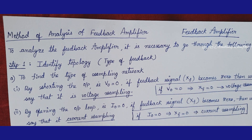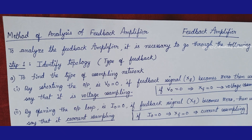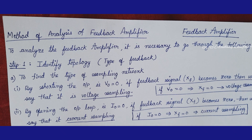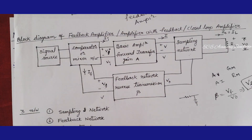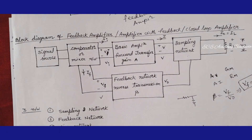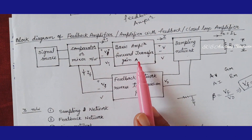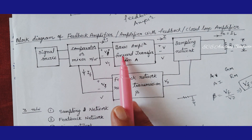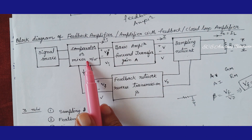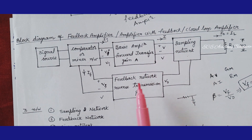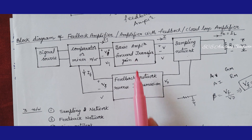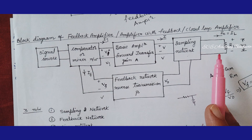Here are the 7 steps to analyze the feedback amplifier. As you remember, the block diagram of the feedback amplifier has a basic amplifier of gain A. At the input side of the amplifier we have a mixer network, and at the output of the amplifier is a sampling network. A feedback network of ratio beta is connected across the amplifier A.